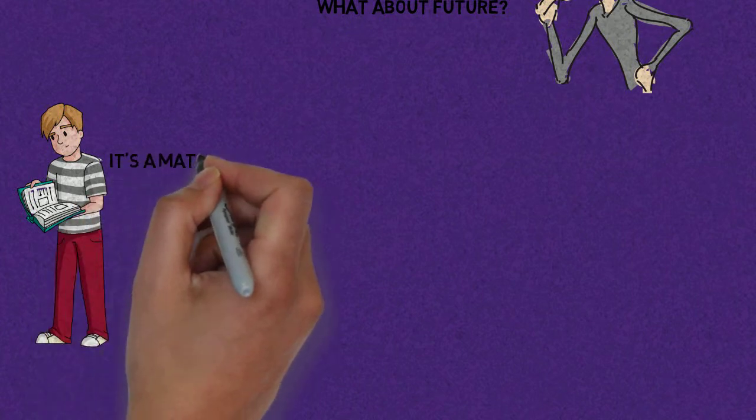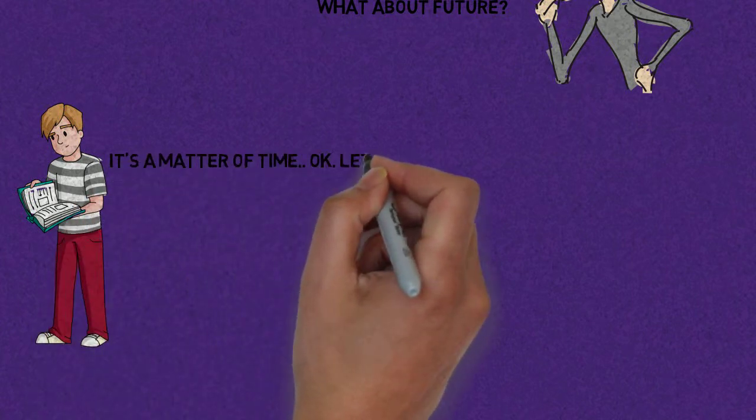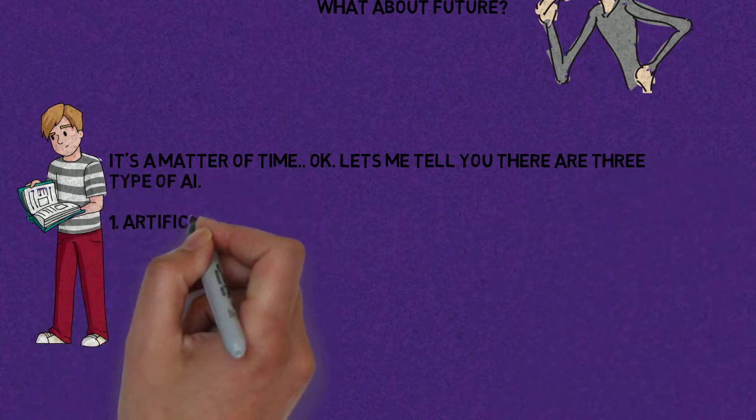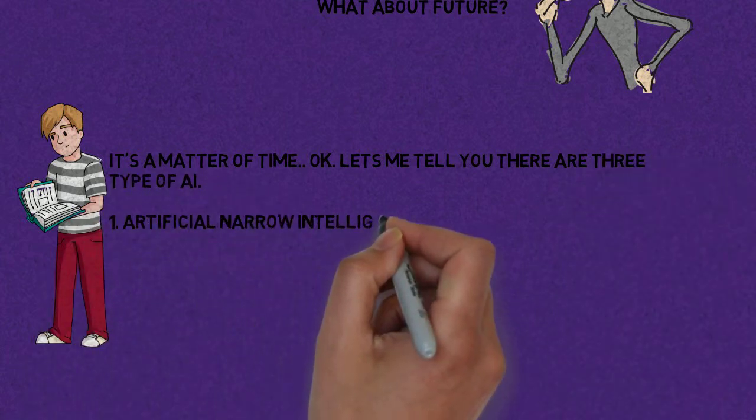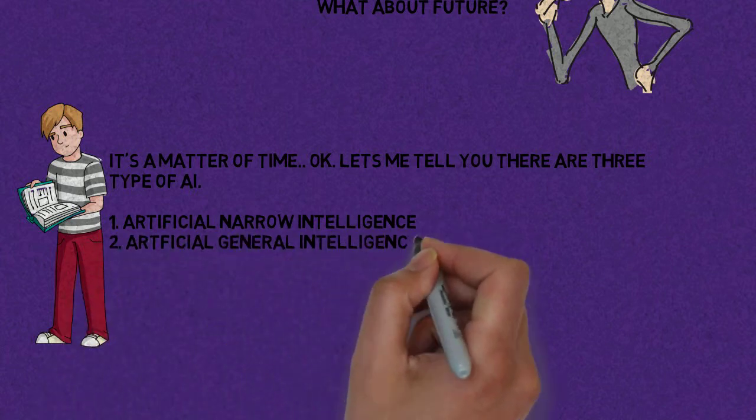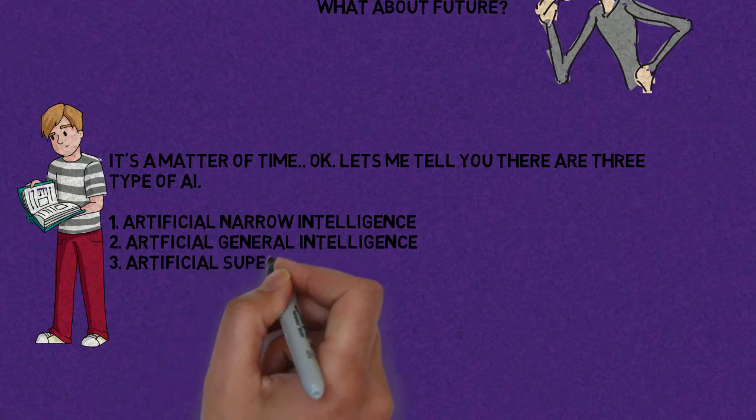Ok, let me tell you there are three types of AI: 1. Artificial Narrow Intelligence, 2. Artificial General Intelligence, 3. Artificial Super Intelligence.